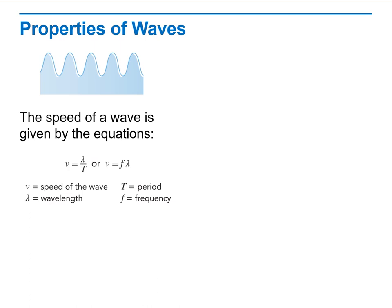What is lambda? Lambda is wavelength. T is for period or time. F is for the frequency.